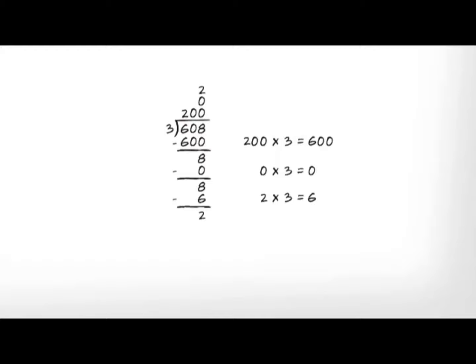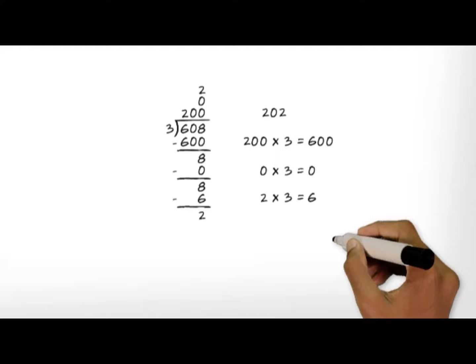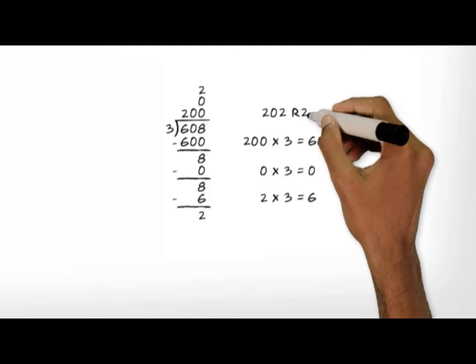To find the quotient, we add the number of groups we have taken out. That's 200 plus 2, or 202. We have taken out 202 groups of 3 from 608. We also have 2 left over, so the remainder is 2.